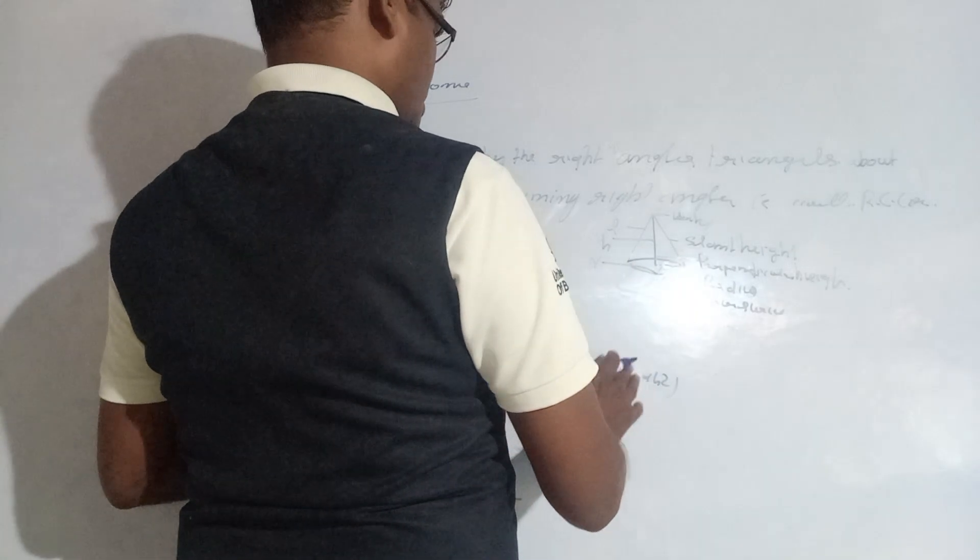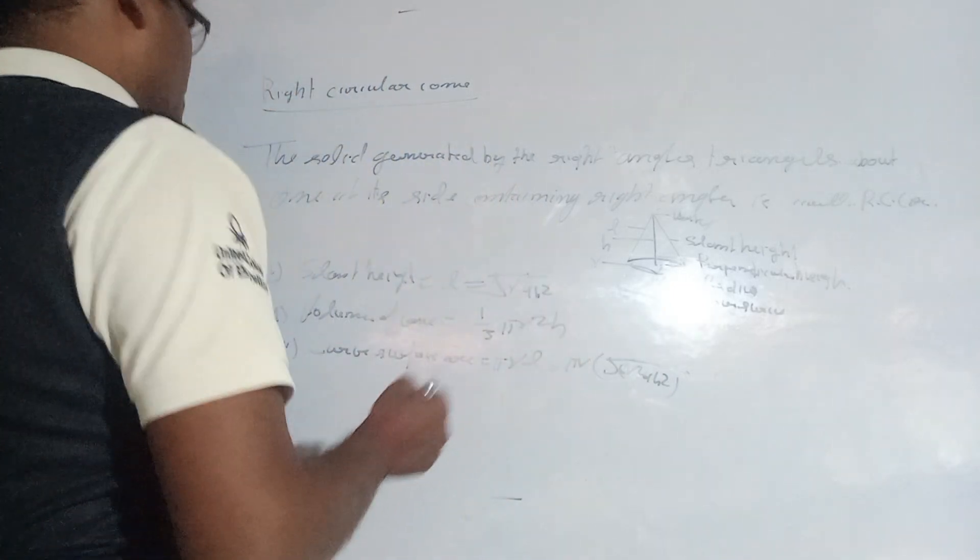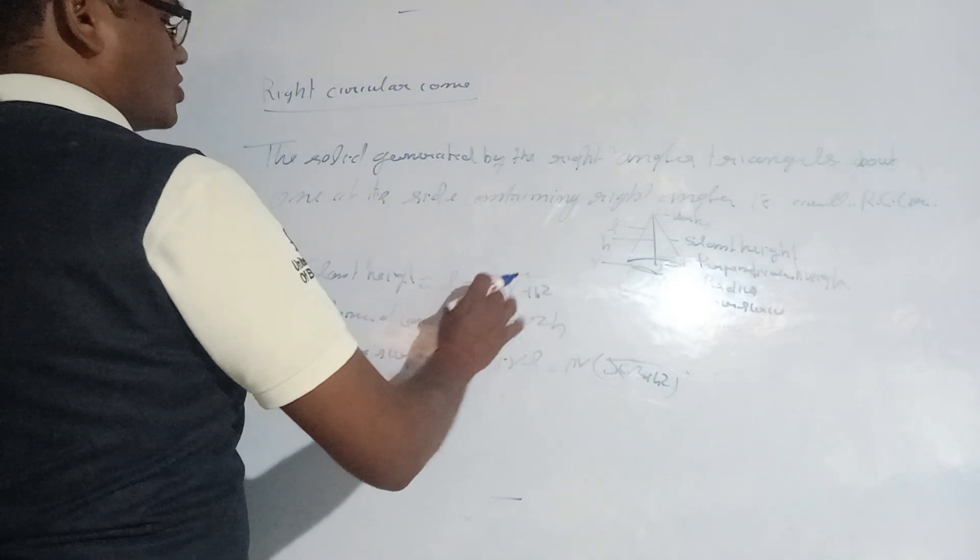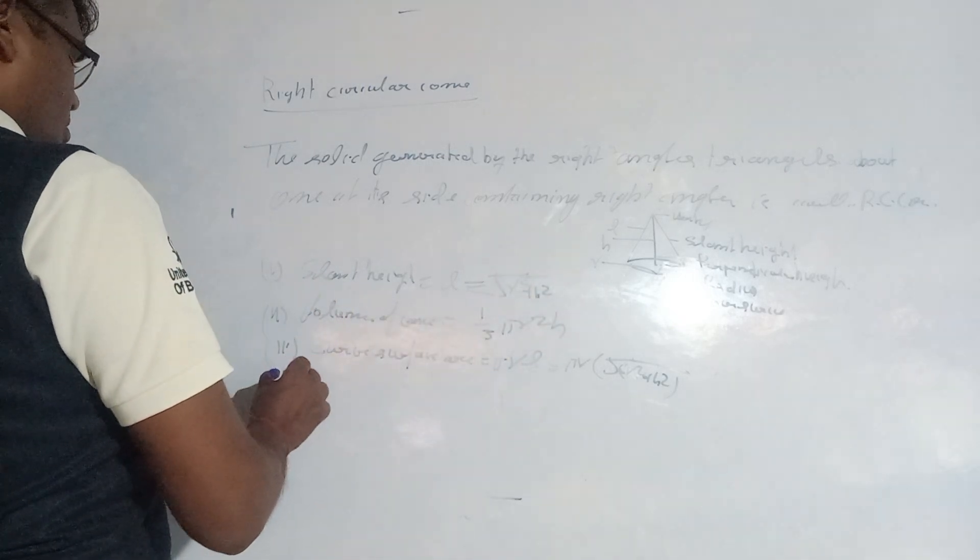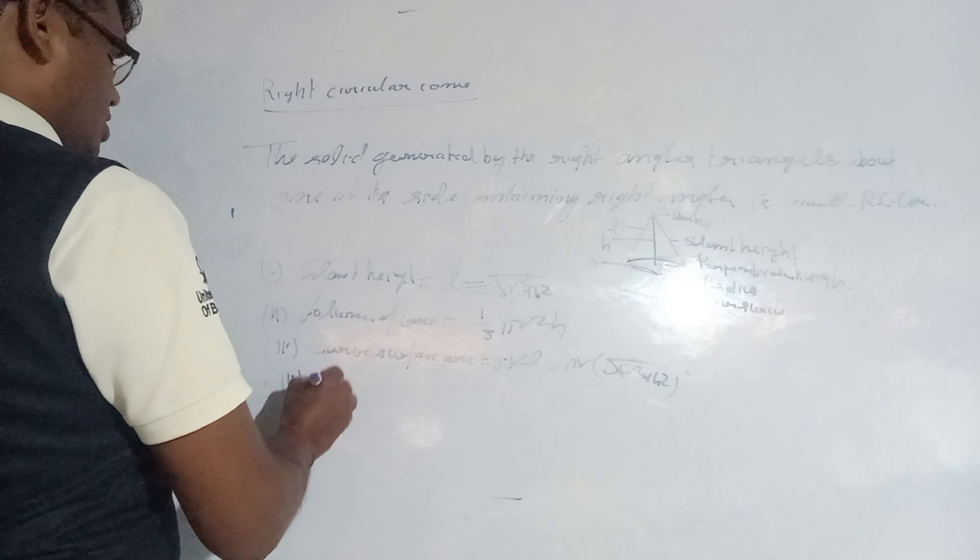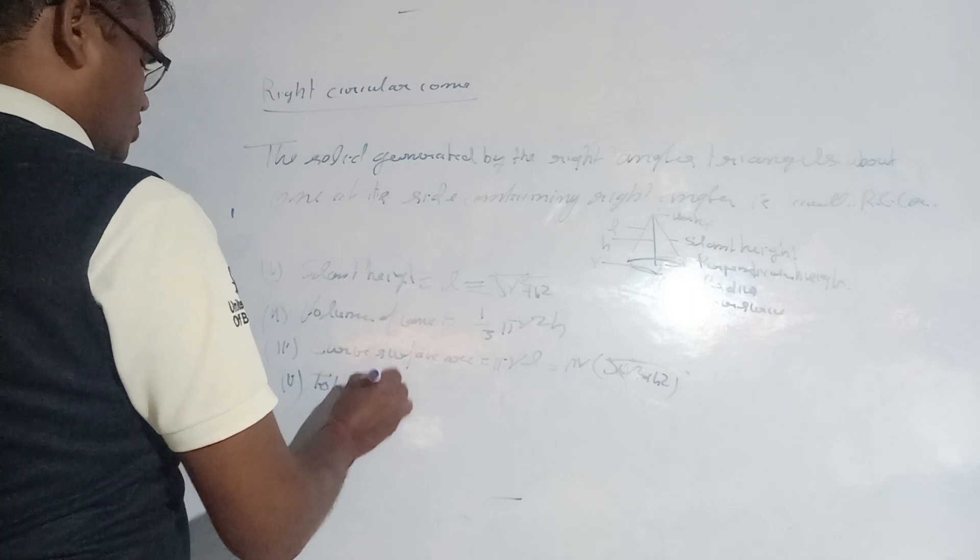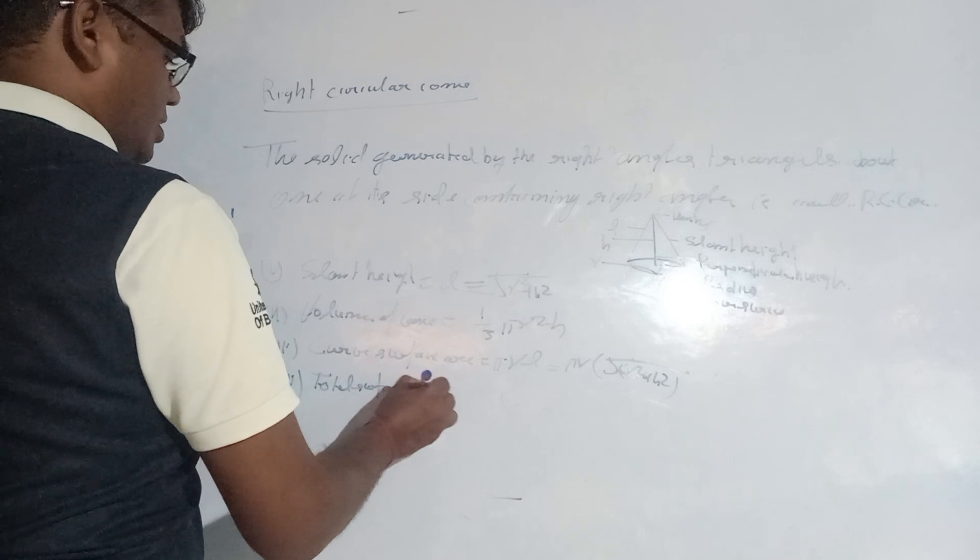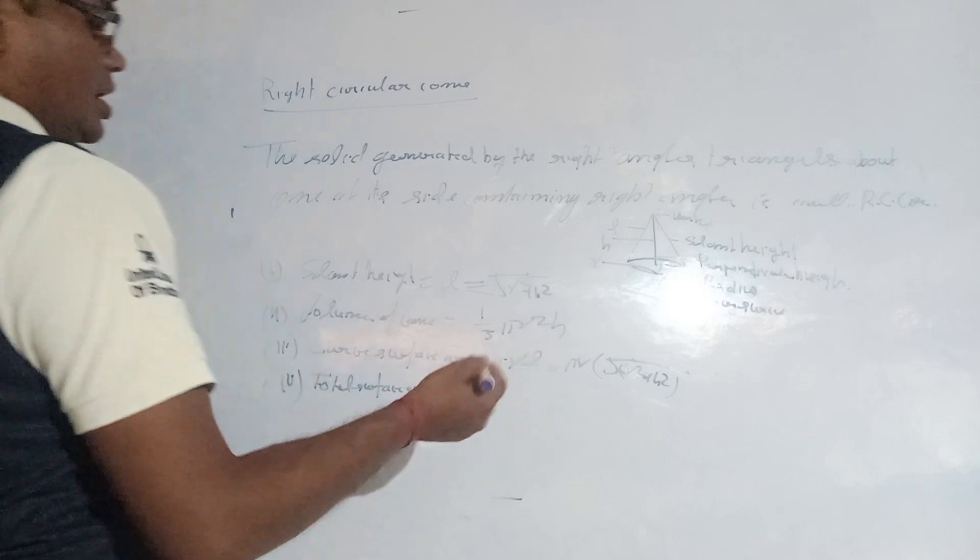The formula for total surface area is the base area plus the lateral surface area.